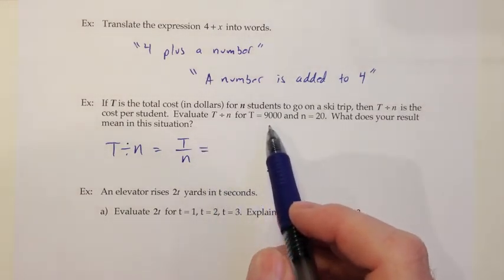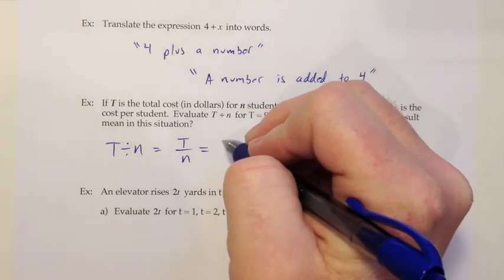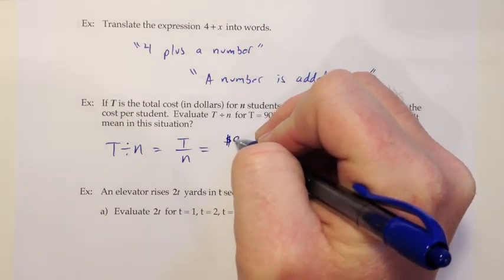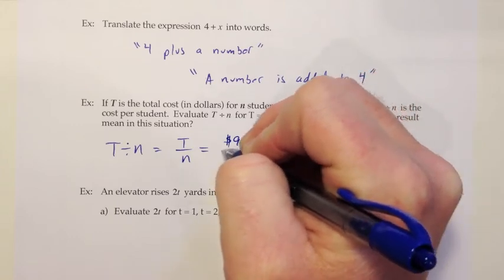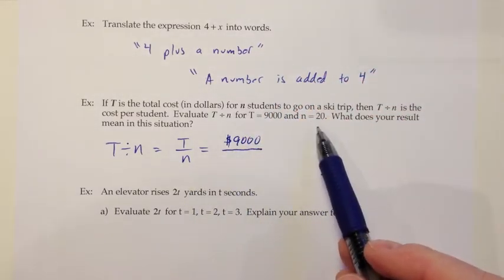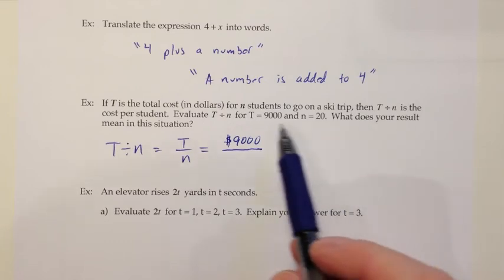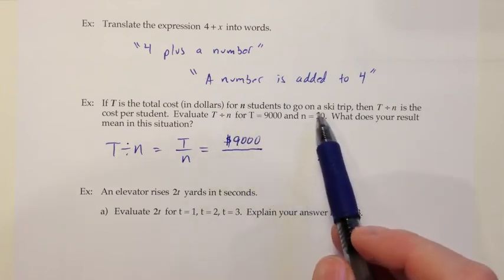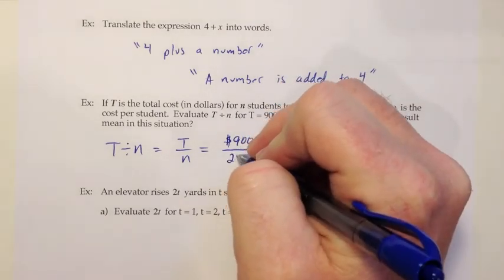The t is 9000, but 9000 what? Well, t is the cost in dollars, so I'm going to say that's 9000 dollars I'm plugging in. For the denominator we want n, where n is 20, but 20 what? n is the number of students going on the trip, so that would be 20 students.